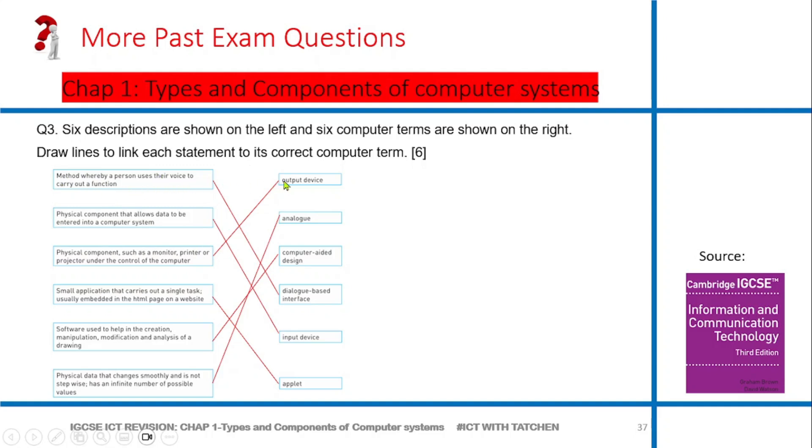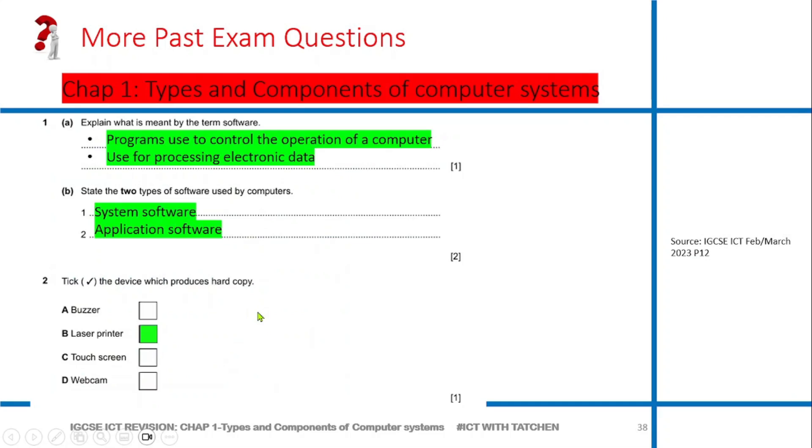The first one is methods whereby a person uses their voice to carry out a function. Physical components such as a monitor - that's an output device. Analog - continuous data that changes smoothly and is not stepwise. Computer-aided design - software used to help in creation, manipulation, modification, and analysis of drawing. Dialogue-based interface - method whereby a person uses their voice to carry out the function. When you're having a dialogue, you're talking, you're discussing with somebody. Input device, output device - you should know that. Once you figure out what you know best, then you work from there.